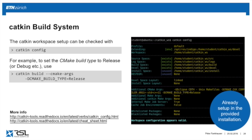There's a Catkin configuration you can view by typing catkin config. One important part is the CMake arguments. You can set them with catkin build followed by --cmake-args and the arguments you need — for example, building in debug or release mode, or creating Eclipse project files. On your virtual machine this is already set up, so nothing to do right now, but useful for future reference.